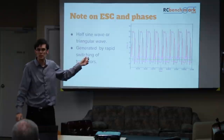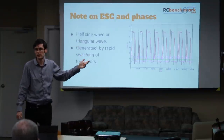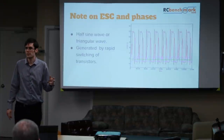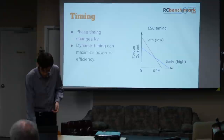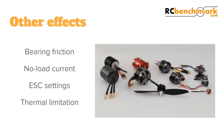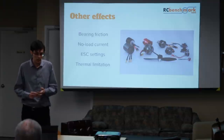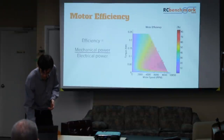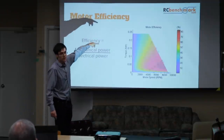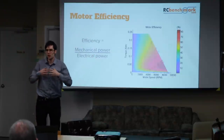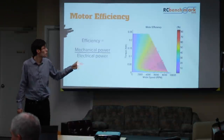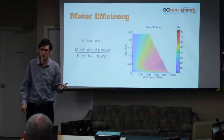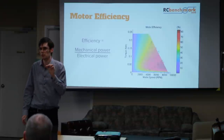Switching frequency — how often the ESC switches, typically 12 kHz or 24 kHz — also matters. More switching means more transistor losses because transistors are less efficient when switching. Other factors include bearing friction (pretty small), no-load current, ESC settings, and thermal limitation. For a real motor you can't just send unlimited current because you can burn the motor almost immediately. There's a limit to the torque a motor can generate continuously, though high torque is possible for very short bursts before the motor overheats.